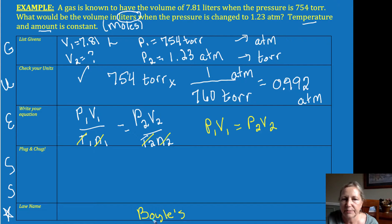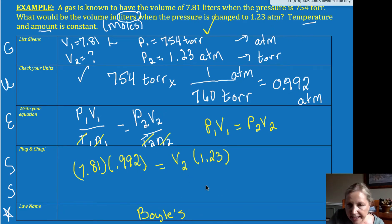Now I can substitute and solve, or plug and chug. So I've got 7.81 times 0.992—remember I changed my P1—is equal to my new volume times 1.23. And if I did my math right, always double check me, anybody can do a finger slip, I have 6.30 liters as my final answer.